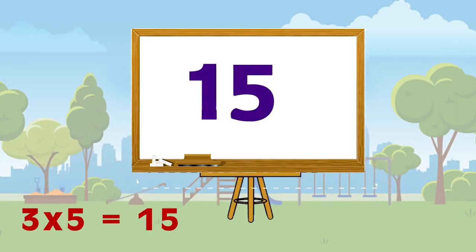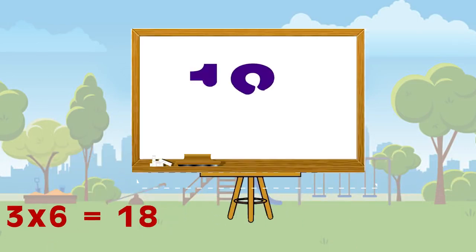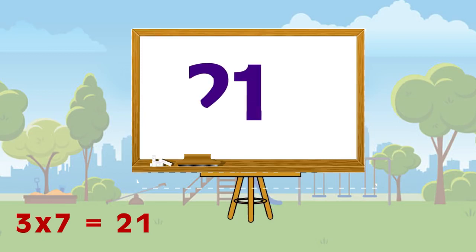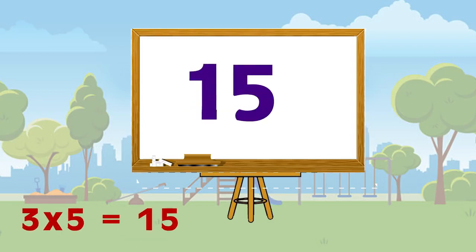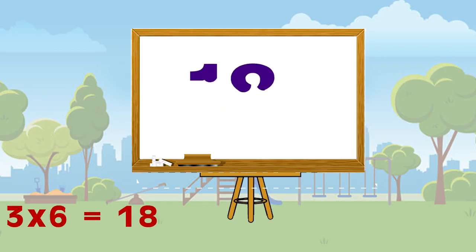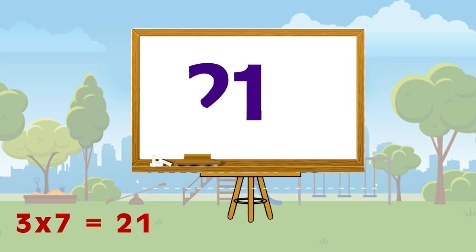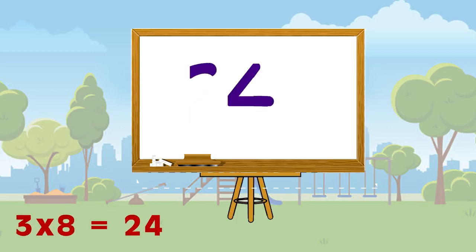Three fives are fifteen, three sixes are eighteen, three sevens are twenty-one, three eights are twenty-four. Three fives are fifteen, three sixes are eighteen, three sevens are twenty-one, three eights are twenty-four.